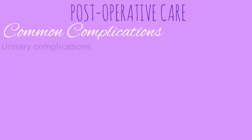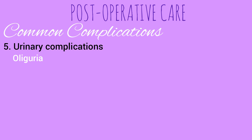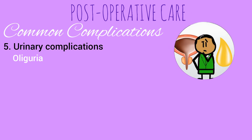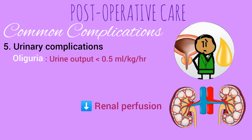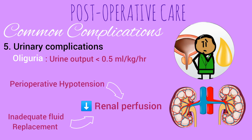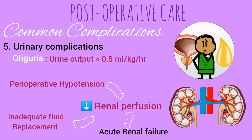Moving on to urinary complications — oliguria is a common complication in the post-operative period. It is defined as urine output less than 0.5 ml per kg per hour. It is most commonly caused by reduced renal perfusion resulting from perioperative hypotension or inadequate fluid replacement, and if left untreated it may cause acute renal failure.